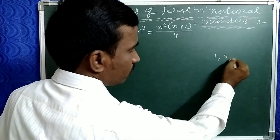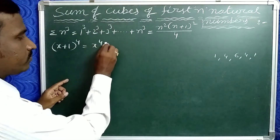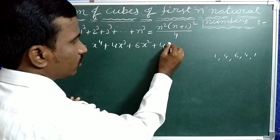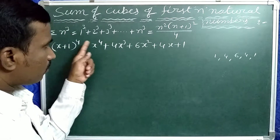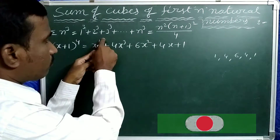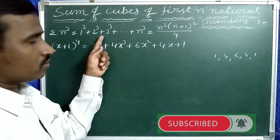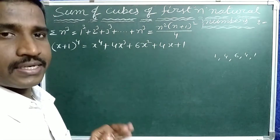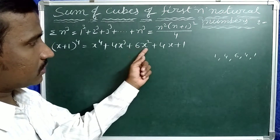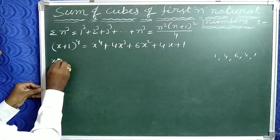Using Pascal's triangle, the coefficients are 1, 4, 6, 4, 1. That is why x plus 1 whole to the power of 4 means x to the power of 4 plus 4 into x cube plus 6x square plus 4x plus 1. Here, the exponent of x is decreased — x power 4, x cube, x square, x power 1, and x power 0. So x plus 1 whole to the power of 4 equals that expansion.